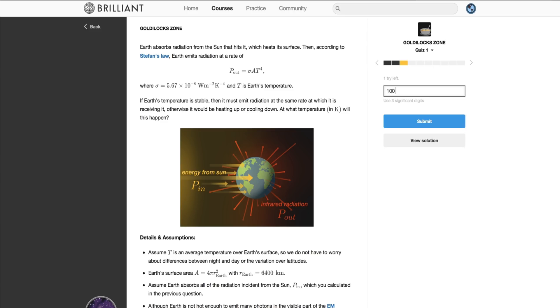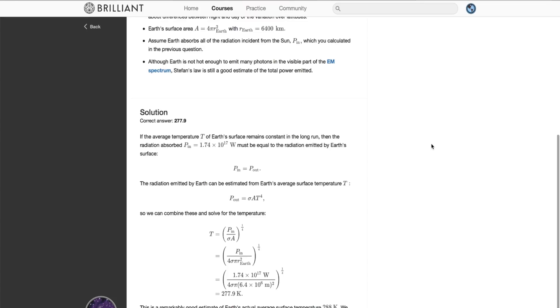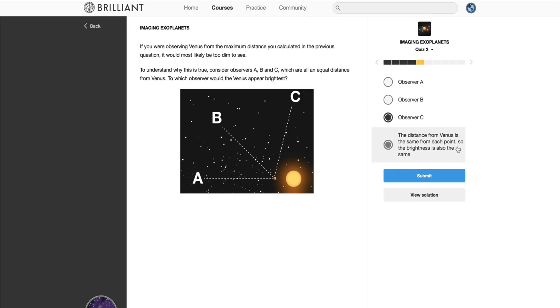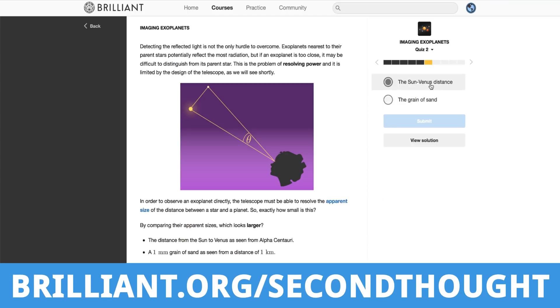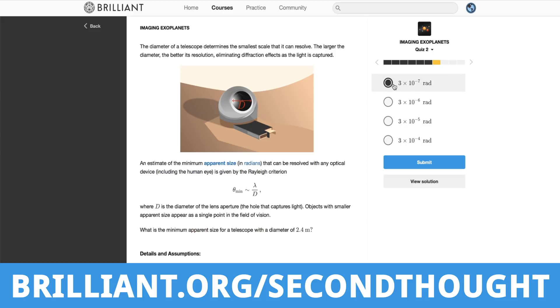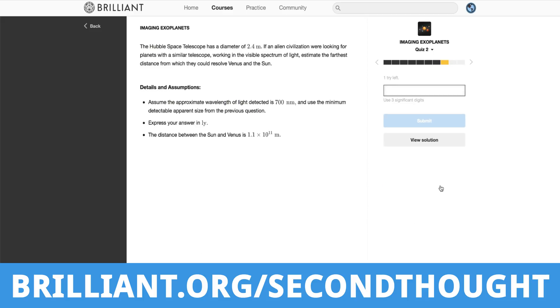As you progress through the classes, when you answer a question incorrectly, you can always correct your misunderstandings and get a solid grasp of each topic, because Brilliant will explain exactly why it's wrong. To support Second Thought and learn more about Brilliant, and truly build your understanding, visit brilliant.org/secondthought and sign up for free. I use Brilliant myself and I can personally give it my highest recommendation, so be sure to check it out by following the link below.